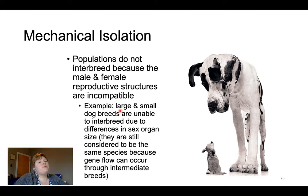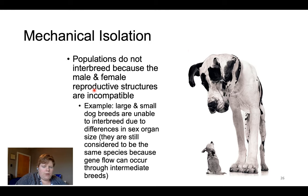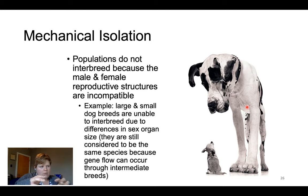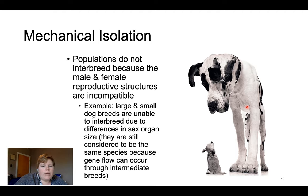There's also mechanical isolation. If you think about a tiny chihuahua and a huge Great Dane, left to their own devices they probably can't interbreed — their reproductive structures are not compatible. Very large breeds and very small breeds are unable to mate and have offspring because of the large size difference. However, sometimes you can get mixes through intermediate sizes — if a chihuahua mated with a slightly larger dog and a Great Dane with a slightly smaller dog, you can get that genetic mixing at intermediate sizes. But if you took those two extremes and tried to put them together, it wouldn't work. Over time, if those sizes get too distinct, you can't come back together.